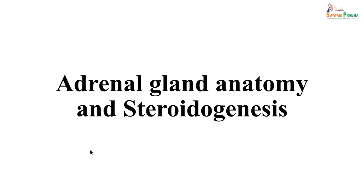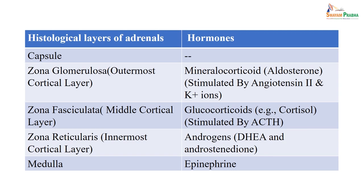When you look at adrenal gland anatomy and how steroidogenesis takes place — basically it is a capsule. If you see the different layers, like zona glomerulosa, where the mineral corticoids like aldosterone are produced. Ultimately, release of aldosterone is stimulated by angiotensin 2, and it also has an effect on potassium ions. If you look at the zona fasciculata, the middle cortical layer, it releases glucocorticoid — what we talk about as cortisol. It is also correlated with release from the pituitary hormone ACTH, adrenocorticotropic hormone.